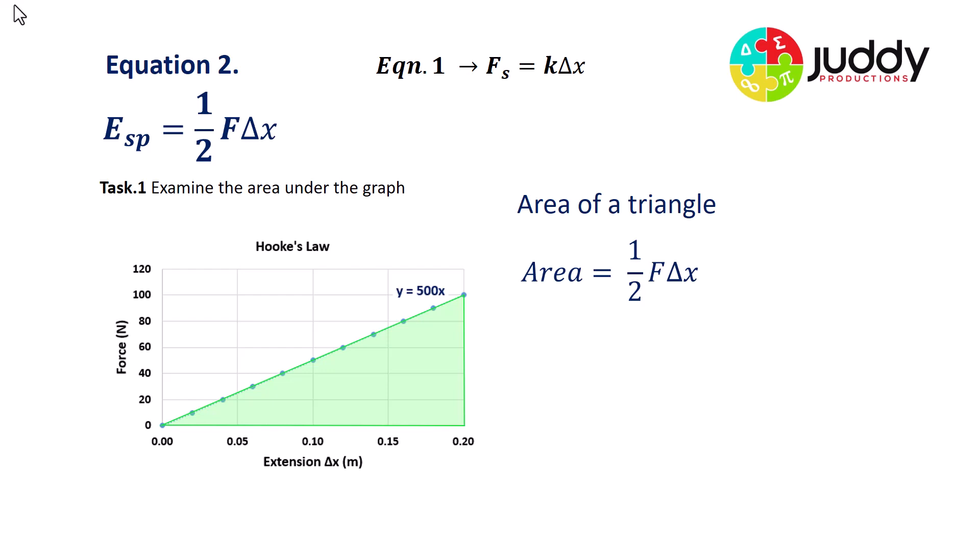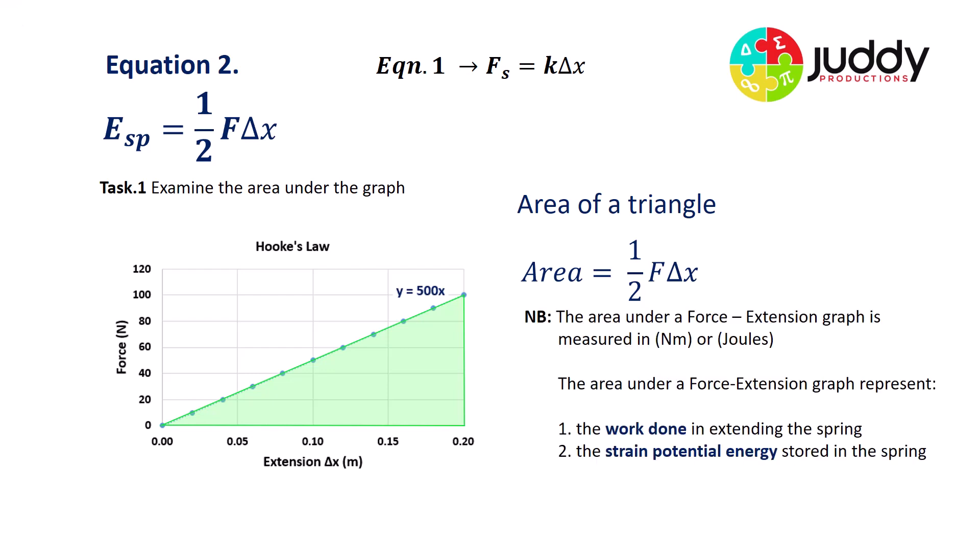But really, what does that represent? If we look at the area under a force extension graph, we can see that it's measured by the product of the force in newtons and the extension in meters. Put them together, we have a unit of measurement of a newton meter, which is commonly referred to in SI units as the joule. So have a think, what else do we know is measured in joules? And of course, it is the work done in extending the spring, which is equal to the strain potential energy stored in the spring.